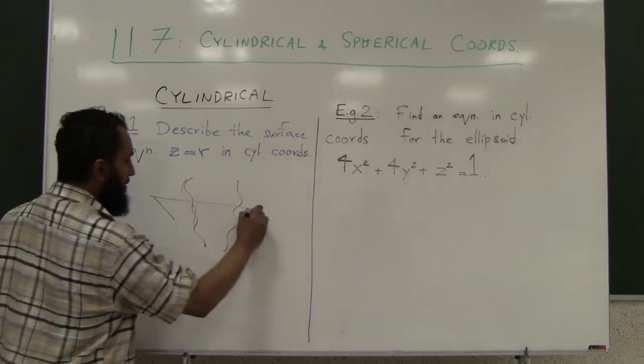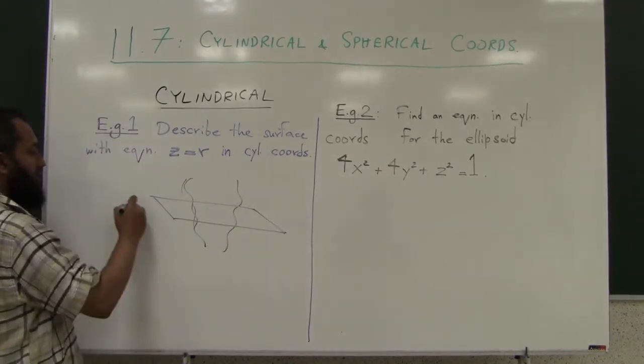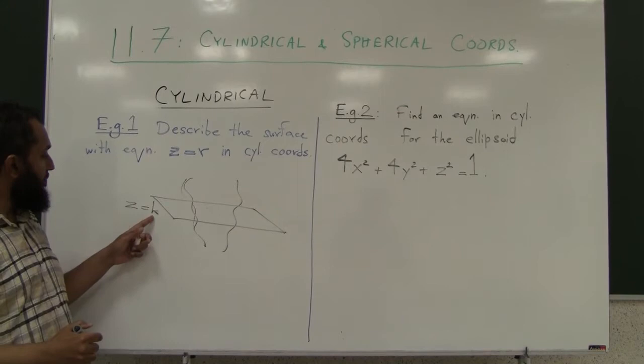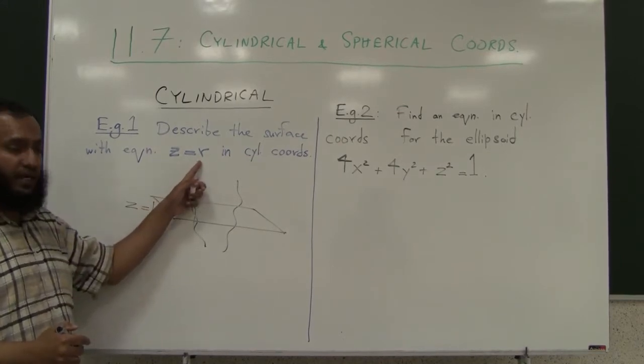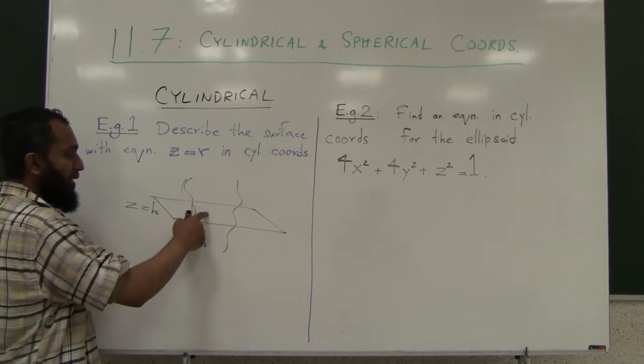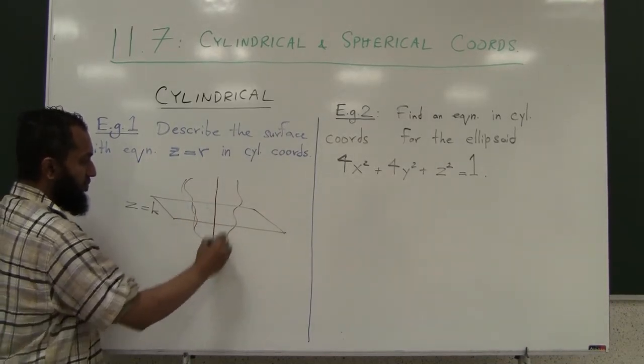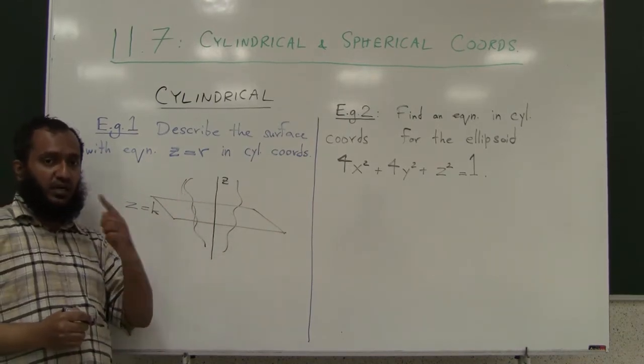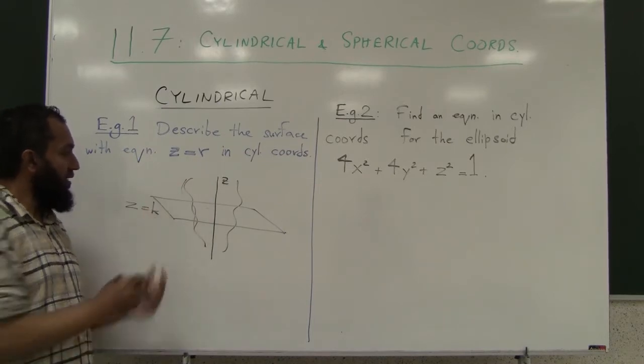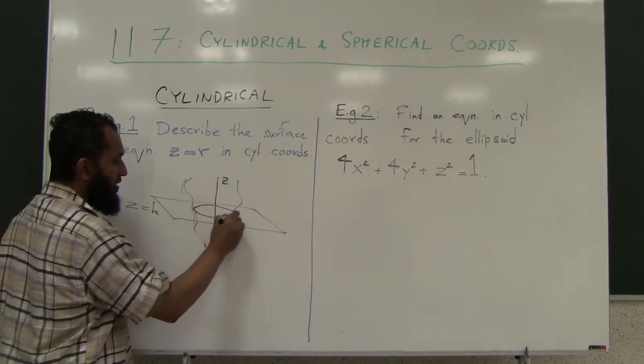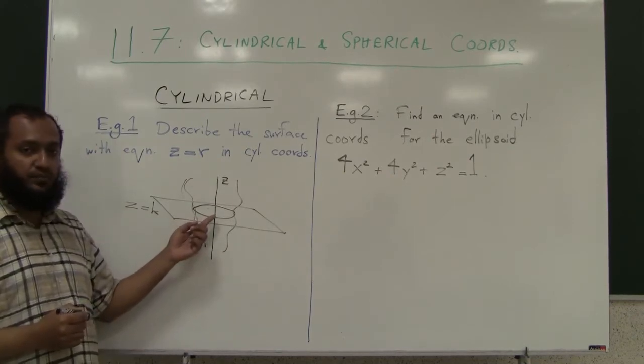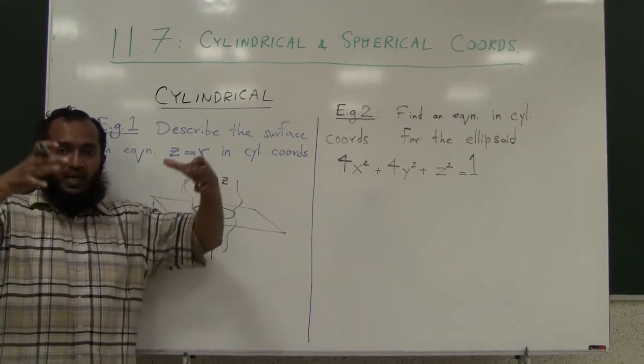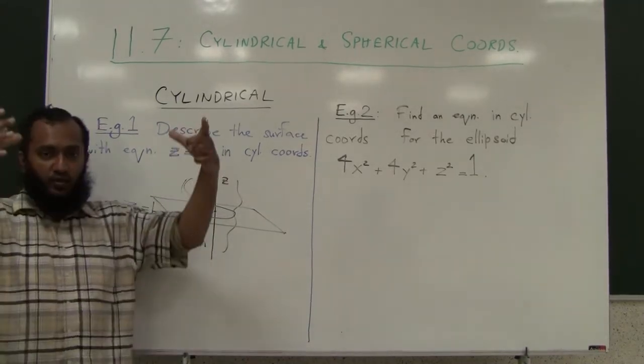Let's say this is the surface. If you cut it at z equals k height, if z is k then r will also have to be k because z equals r. Then r will have to be k, and theta can be anything, which gives you a circle of radius k.